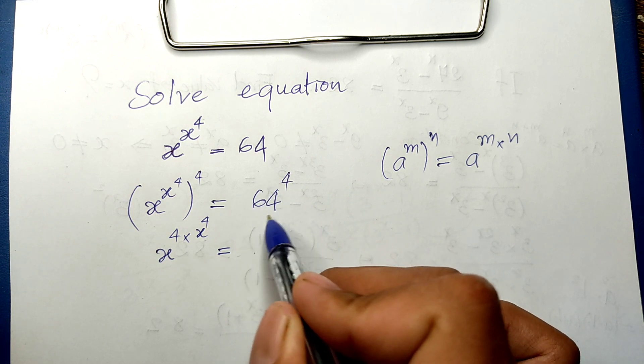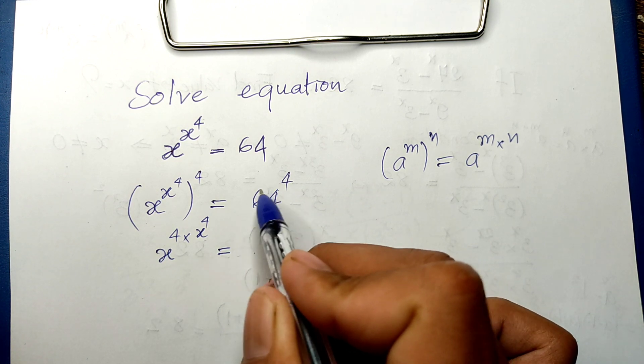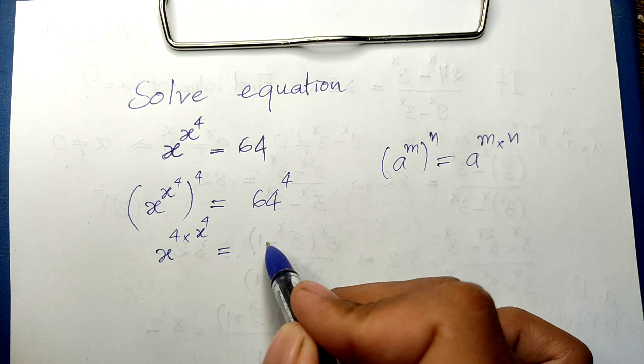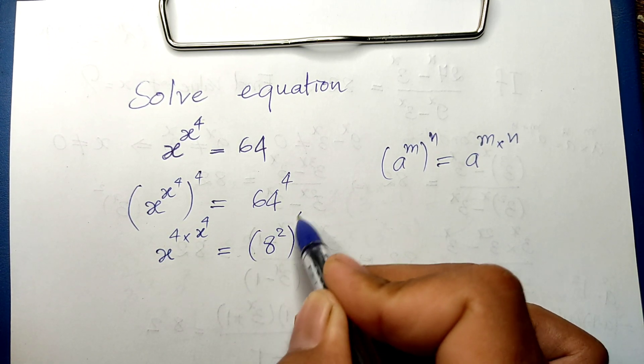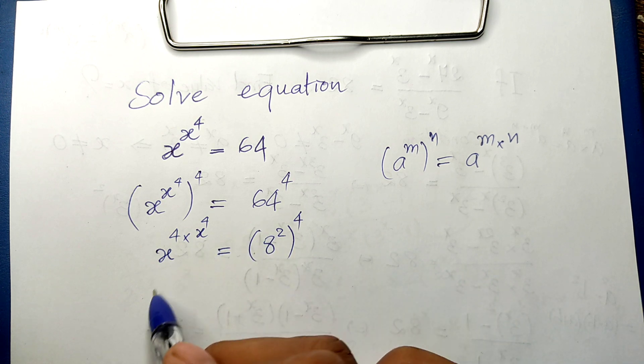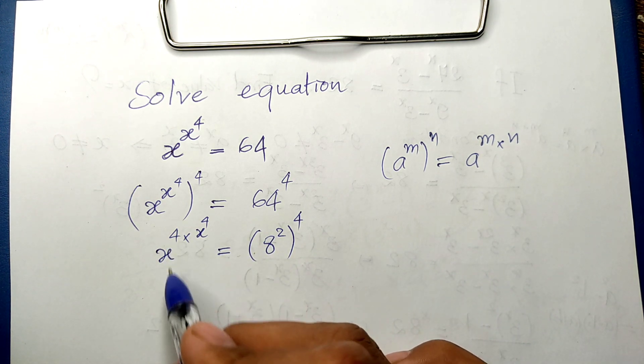And this we also write it x to the 4th power, all to the power x to the 4th. Using this rule, we multiply, so we get 4 times x to the 4th.